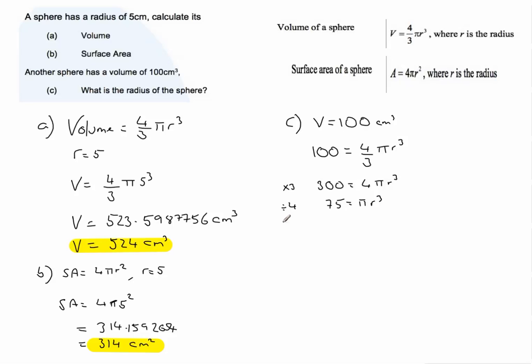which is going to give me 75 equals pi r cubed. Then I'm going to divide both sides of the equation by pi. So I end up with 75 over pi is equal to r cubed. And then I just need to find the cube root.